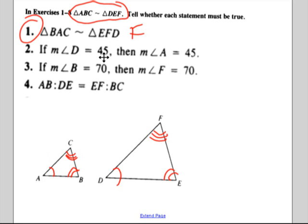If angle D is 45, then angle A is 45. Well, do they correspond? Yeah, we can see that in the similarity statement. So I don't even need to look at the figure. That's true. Angle B is 70. So angle F is 70. Do they correspond? No. B and E correspond. But B does not correspond with F. And you can see that in the figure. So that's going to be false.